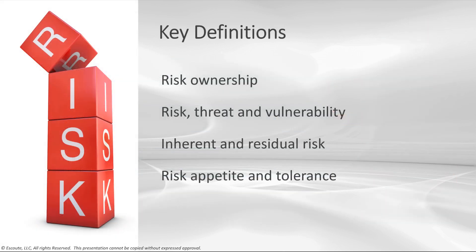It's good to look at a few key definitions. First, risk ownership: this is the person or business unit who is ultimately affected by the risk. Notice it's not always IT — because if an IT-related risk becomes real and a business unit goal is affected, that may no longer be an IT-owned risk.